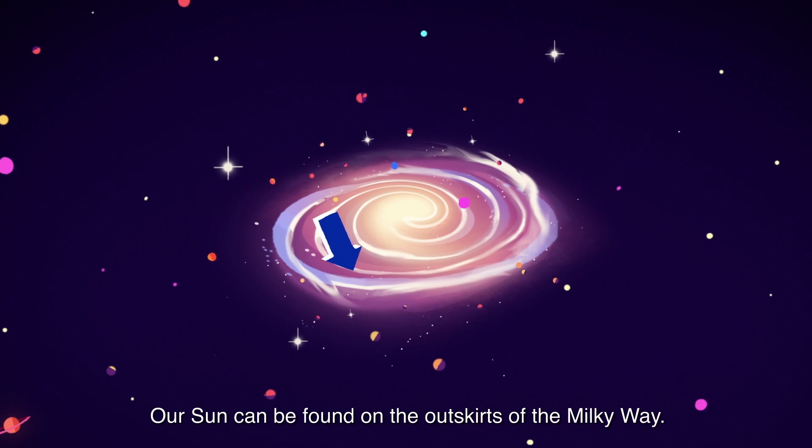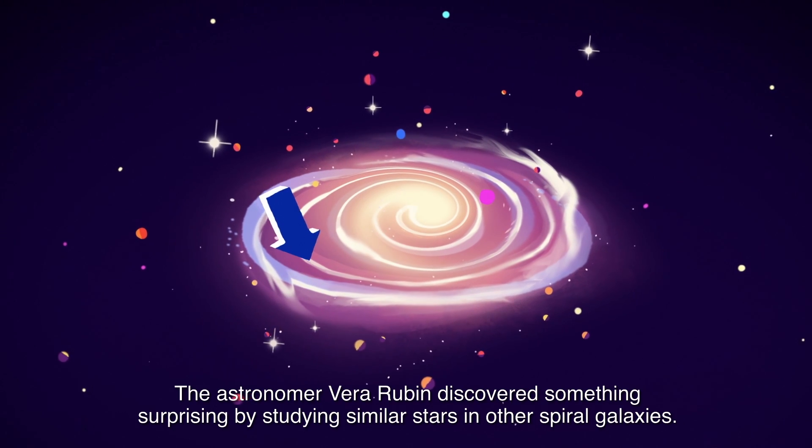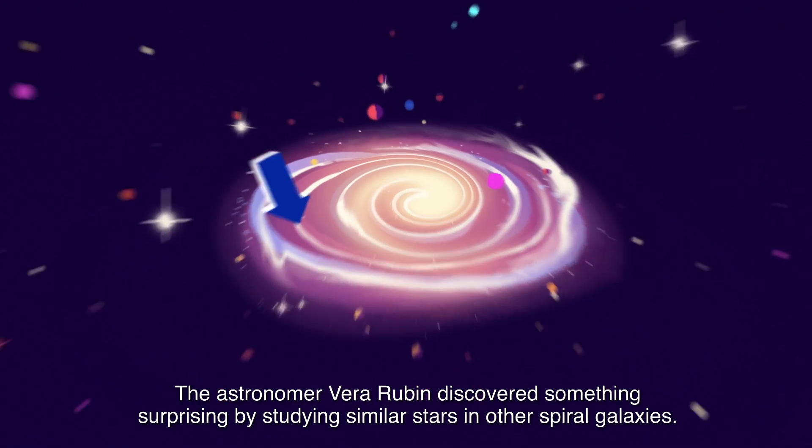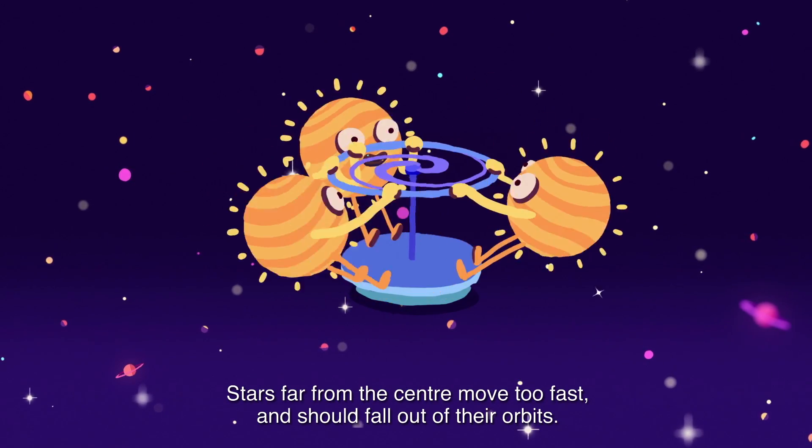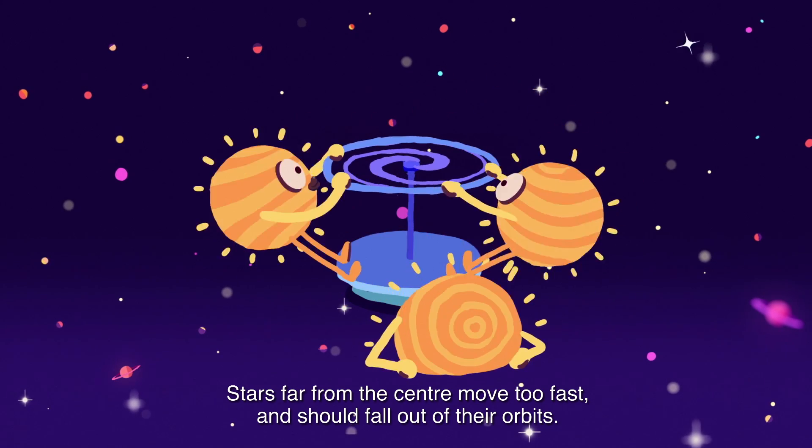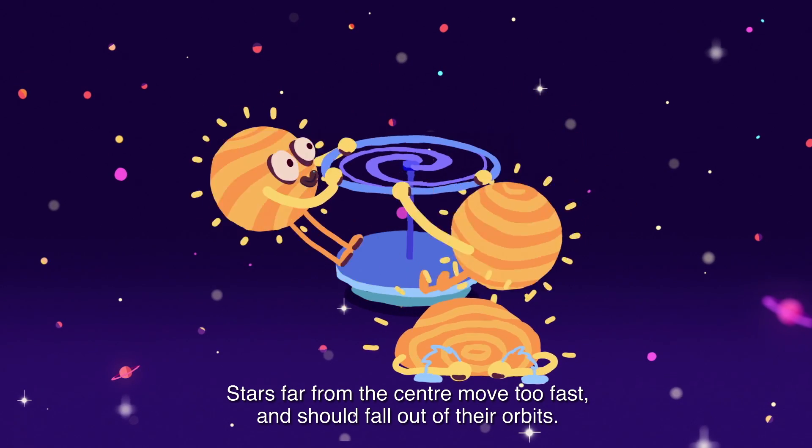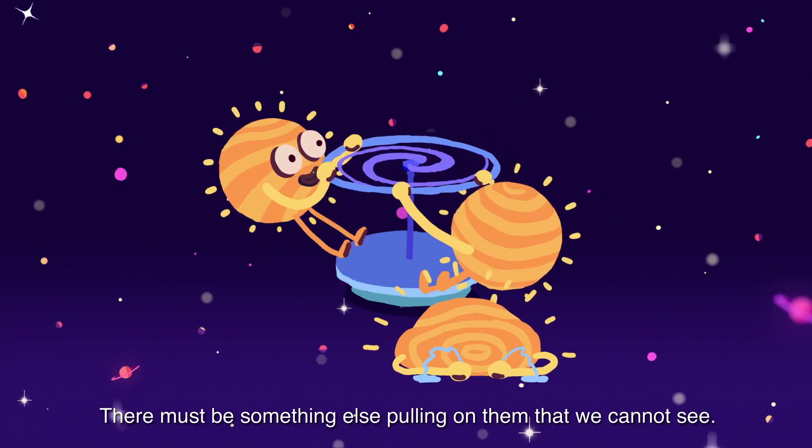Our Sun can be found on the outskirts of the Milky Way. The astronomer Vera Rubin discovered something surprising by studying similar stars in other spiral galaxies. Stars far from the center move too fast and should fall out of their orbit. There must be something else pulling on them that we cannot see.